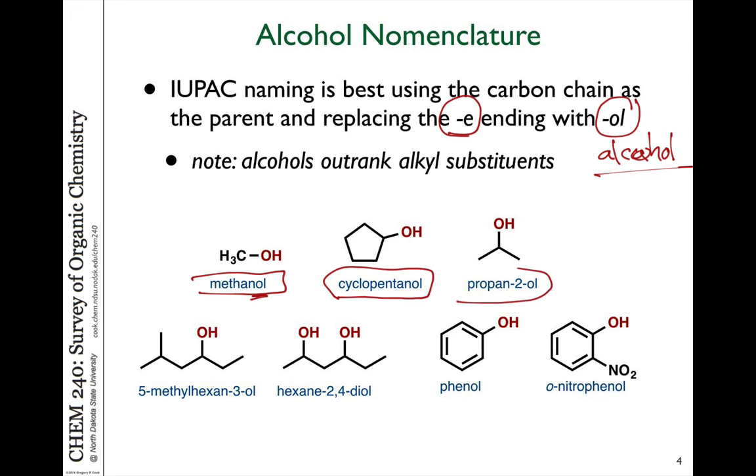Propane 2-ol refers to a propanol where the alcohol is attached to the number 2 carbon. Here you can see that the OL group takes precedent here as well. So this is carbon number 3, even though we have a methyl substituent closer to the other end. Since the alcohol is part of the parent name, it gets precedent for numbering. So in this case, 5-methylhexane-3-ol would name this molecule.